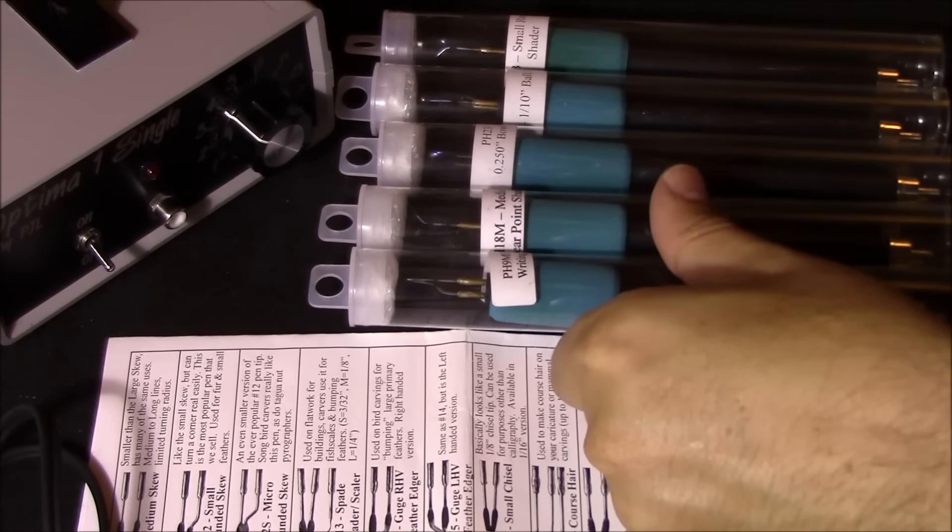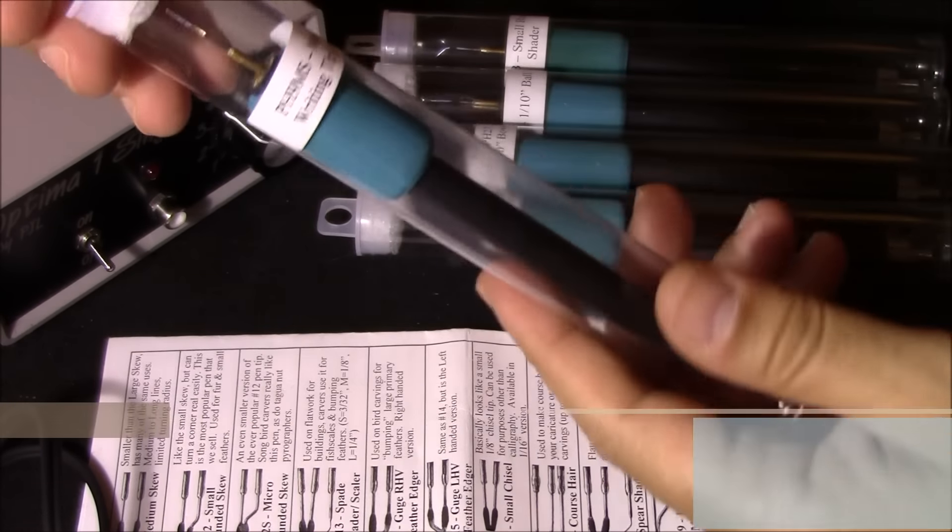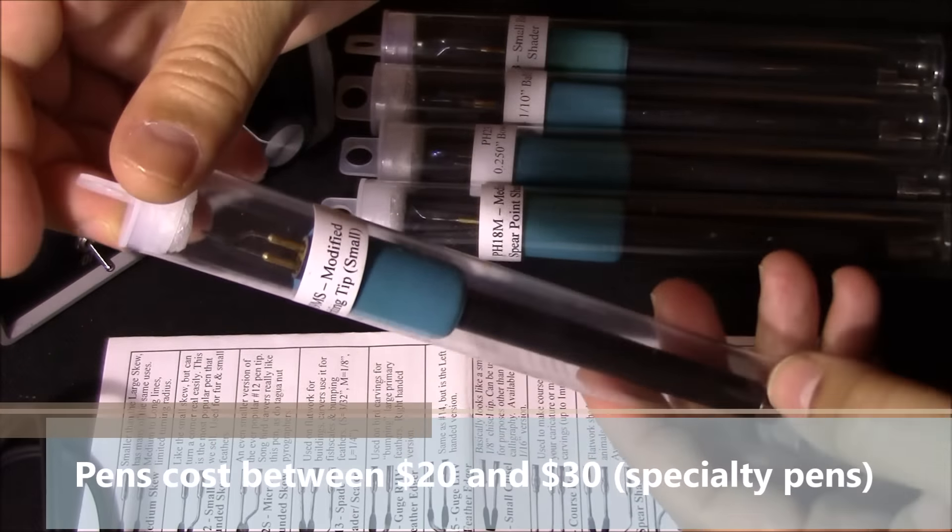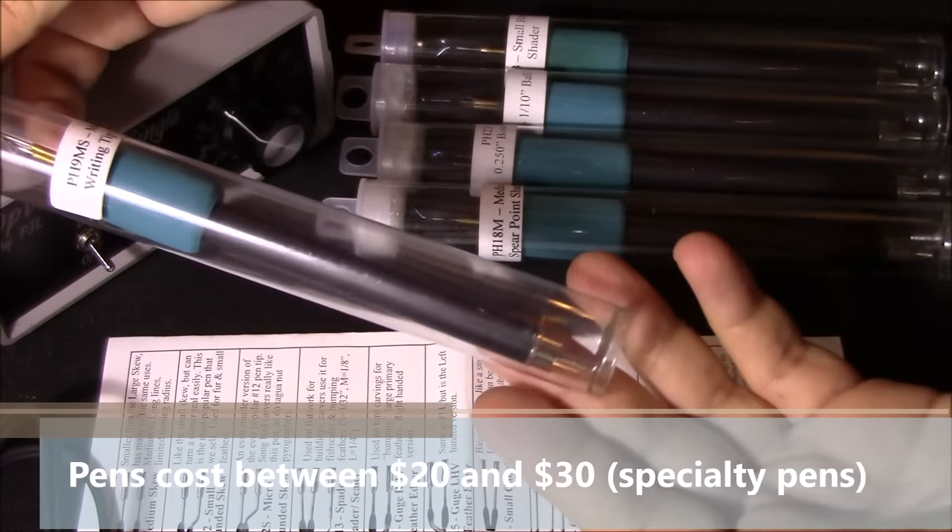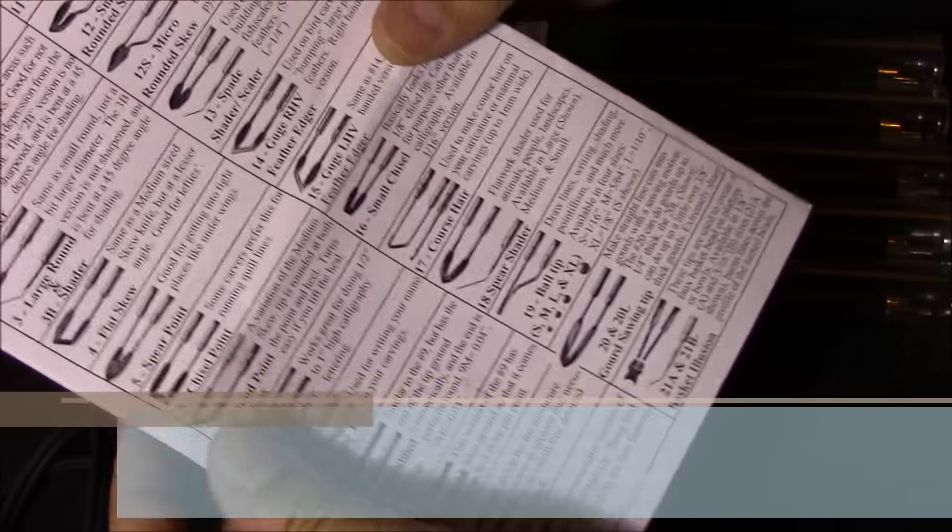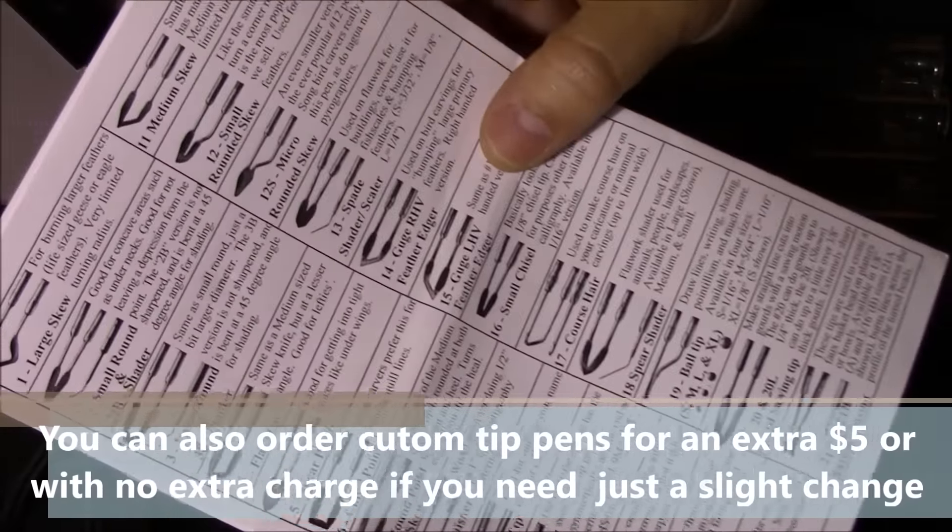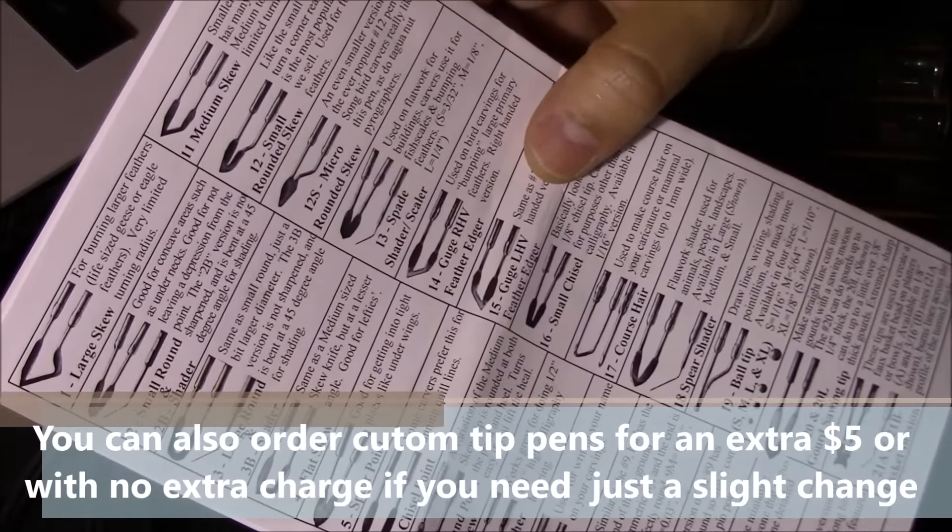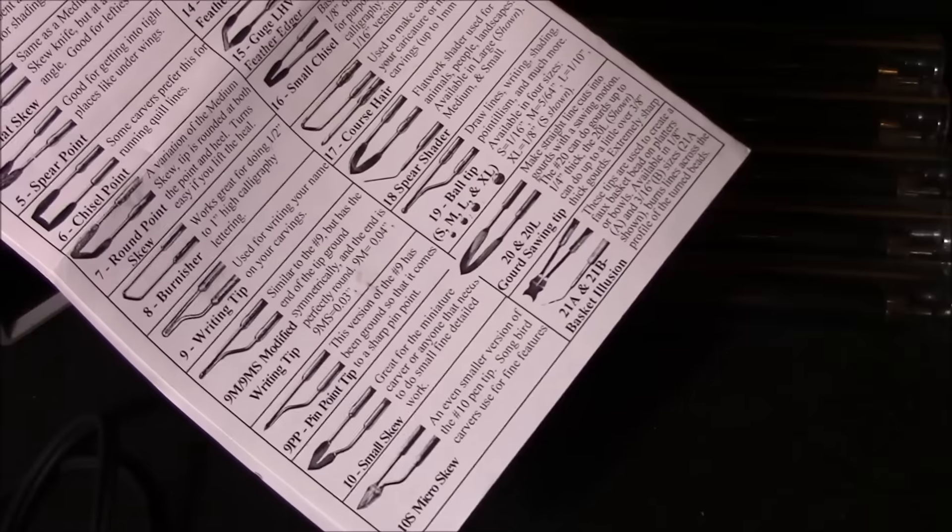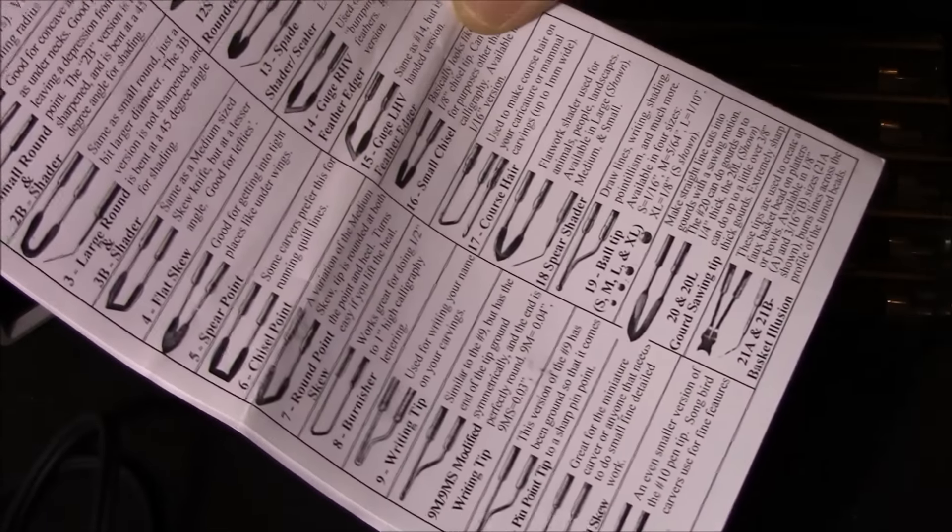So this is the Optima One single burner. This is how your pens will come to you. And you also have all sorts of tips you can choose from if you need to, so that you buy only what you will need.